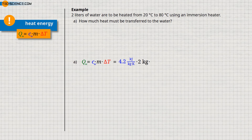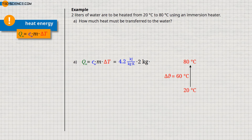Now we need the temperature change to be achieved, which in this case is 60 degrees Celsius since we want to heat the water from 20 to 80 degrees Celsius, which means by 60 degrees Celsius in total. Be careful at this point, because in physics it is usual to use SI base units in the formulas. The SI base unit of temperature is kelvin and not degrees Celsius. We must therefore also specify the temperature change in the unit kelvin.